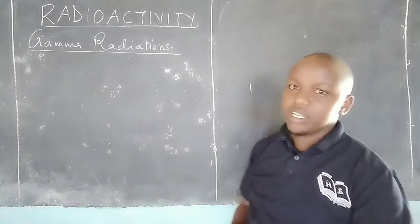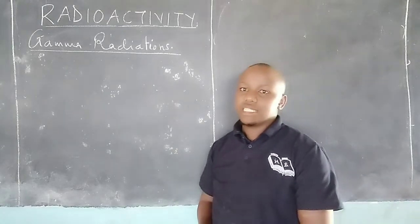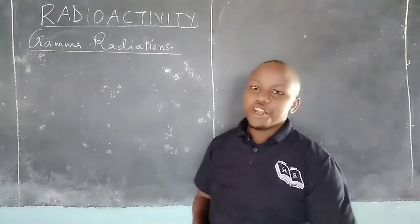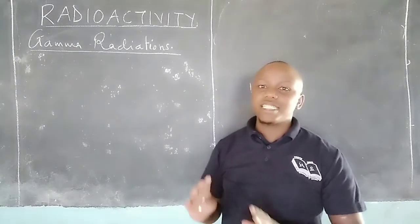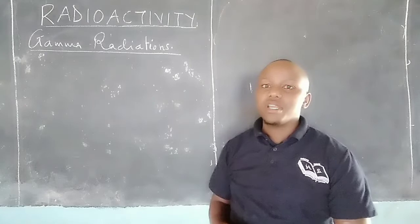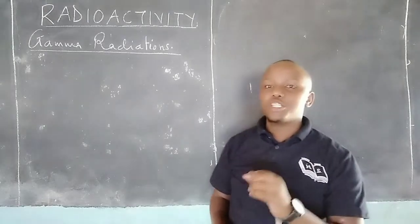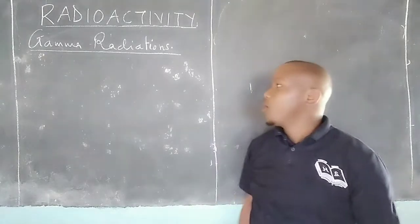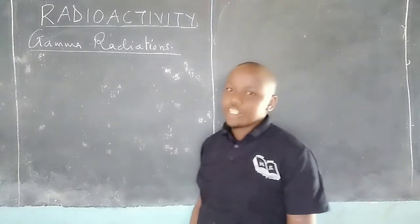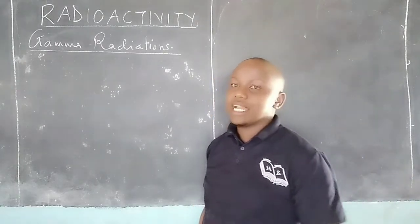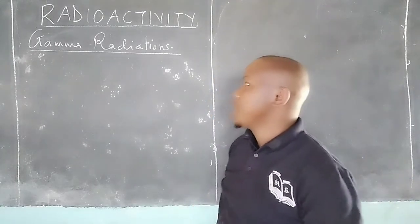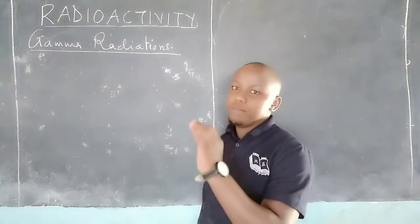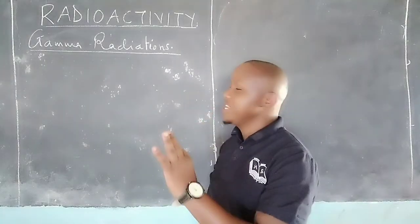As we had mentioned, radioactivity is the release of particles and energy during the process of spontaneous disintegration when a nucleus is not stable or it is unstable. Whenever disintegration of nuclei takes place, we have release of either alpha particles, beta particles, or gamma radiations.